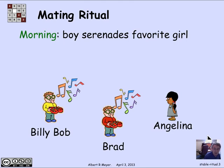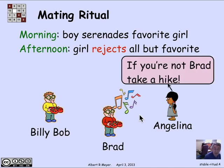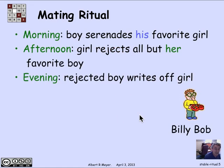Here we have Billy Bob and Brad proposing to Angelina. That means that on the first day, Angelina was at the top of both Brad's list and Billy Bob's list, and they're both going to be proposing and asking if she's willing to marry them. In the afternoon, each girl rejects all but her favorite suitor. In this case, Angelina likes Brad best of all, so she says to everybody else, if you're not Brad, take a hike. And that's what happens at that stage.